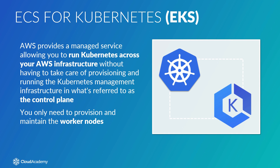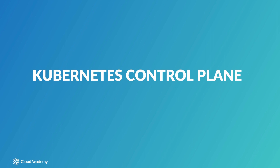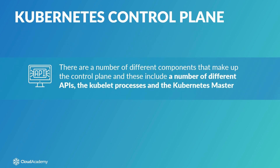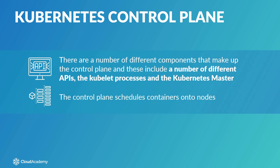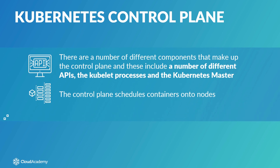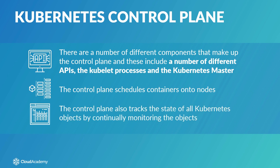So what is a control plane and what are worker nodes? The Kubernetes control plane is made up of a number of different components including a number of different APIs, the kubelet processes and the Kubernetes master, and these dictate how Kubernetes and your clusters communicate with each other. The control plane itself is run across master nodes, and it schedules containers onto nodes. Scheduling in this case refers to the decision process of placing containers onto nodes in accordance with their declared compute requirements. The control plane also tracks the state of all Kubernetes objects by continually monitoring them.